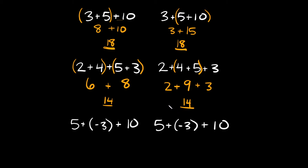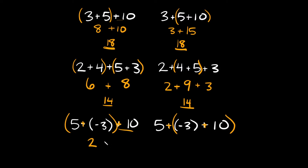This also applies to negative numbers. So if we're adding positive and negative numbers, as long as the only thing we're doing is addition, we can move our parentheses around. On this first one, I'll put the parentheses around the 5 plus negative 3. So 5 plus negative 3 is equal to positive 2, and then we'll add this 10 right here. So 2 plus 10 is equal to 12.